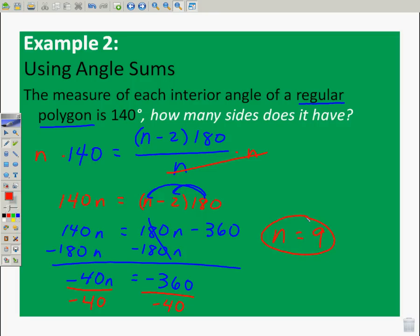I get n is equal to 9. Well, what was I trying to find? Let's try to find how many sides. Can we have a figure with 9 sides? Absolutely, we can. Of course, we can. It's called a nonagon. So, this is a regular nonagon.